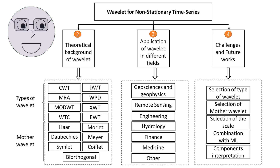Orthogonality is an important property of wavelets. Orthogonal wavelets have a set of basis functions that are mutually orthogonal, which means that they do not overlap. This property makes it easier to analyze and process signals.